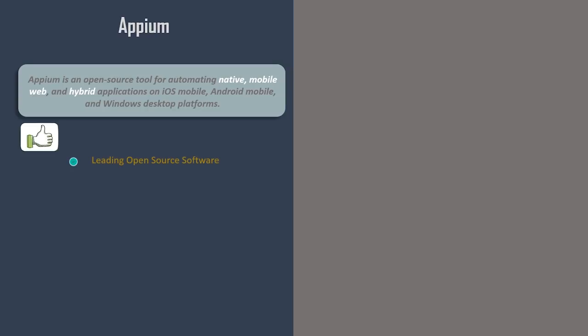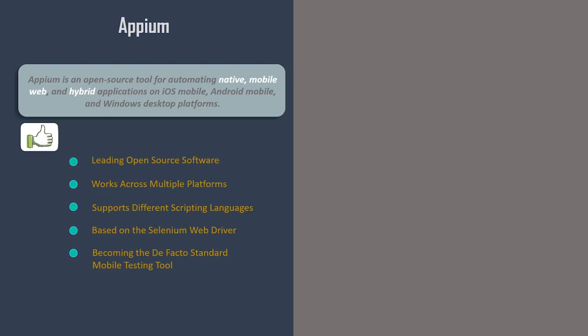Appium is open source, free, and supported by a highly active community of developers worldwide. It works across multiple platforms and in different scripting languages, making it uniquely versatile. One of its most popular features is that Appium is based on the Selenium WebDriver, so using Appium is easy if you have prior experience with Selenium. Appium contributors have designed the software for mobile only and are focused on providing the best mobile testing experience.